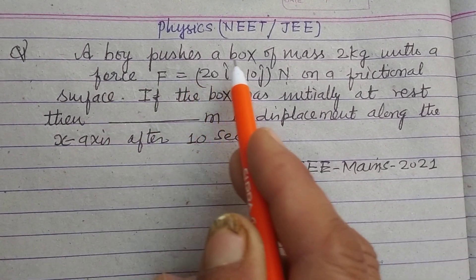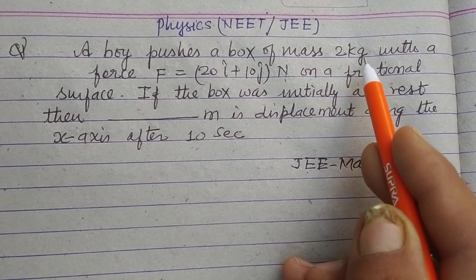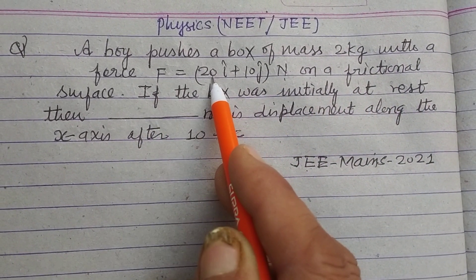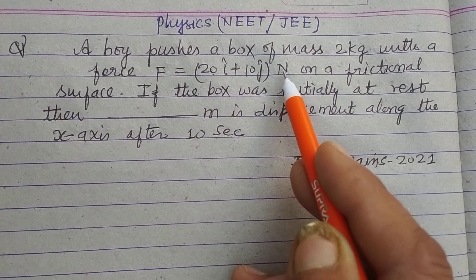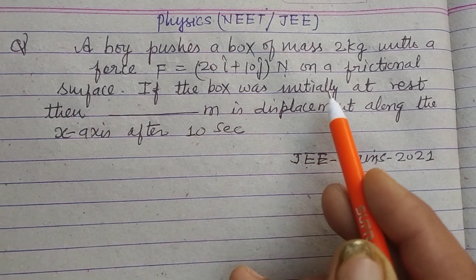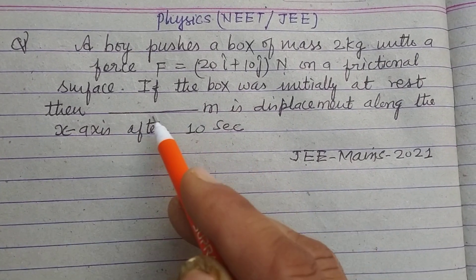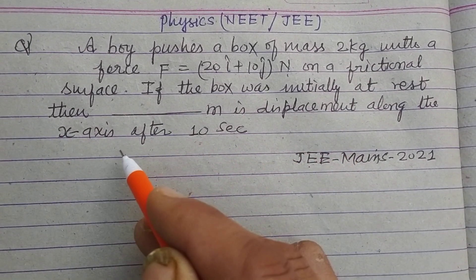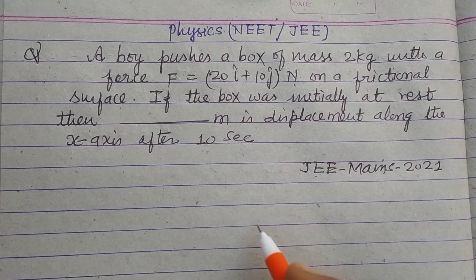A boy pushes a box of mass 2 kg with a force F equal to 20 i cap plus 10 j cap newton on a frictionless surface. If the box was initially at rest, then what is the displacement along the x-axis after 10 seconds? So student,